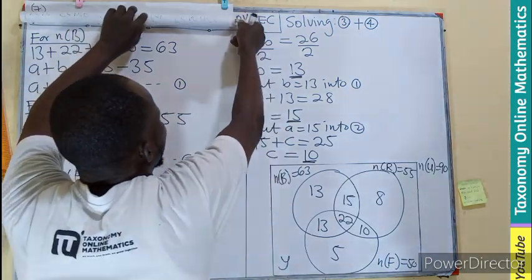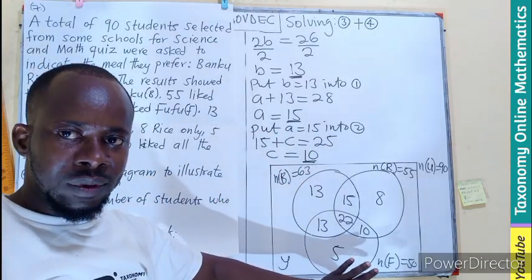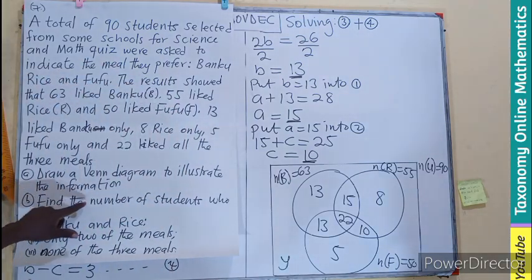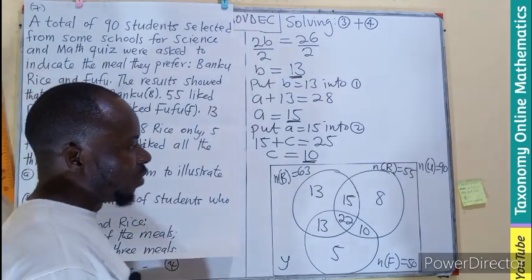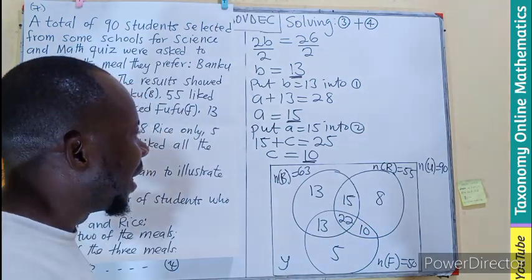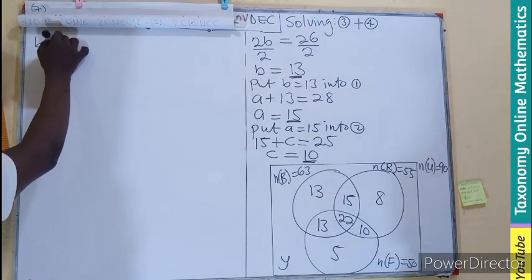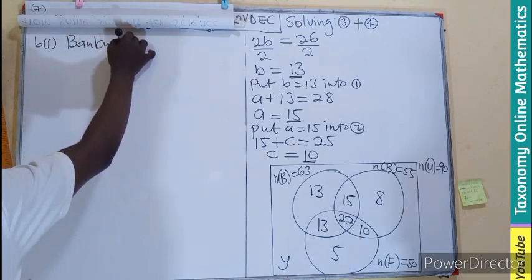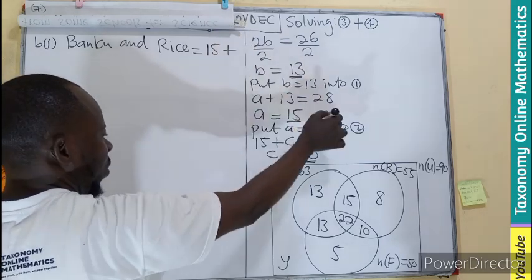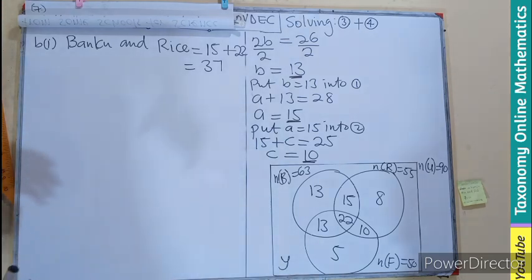The first part was to draw a Venn diagram to illustrate — that was the diagram we drew where A, B, C are filled in; that answers the first part of the question. The second part asks for the number of students who like Bangku and Rice. Bangku and Rice is the region for 15 and 22, so we add those together: 15 plus 22 equals 37. So 37 students like Bangku and Rice.